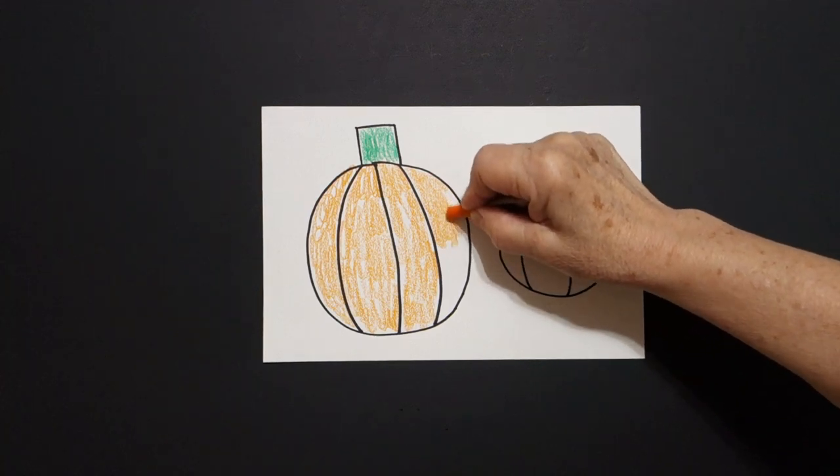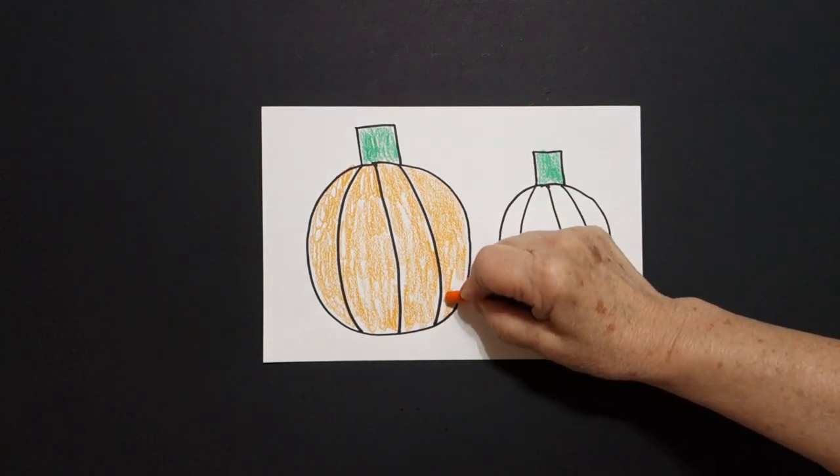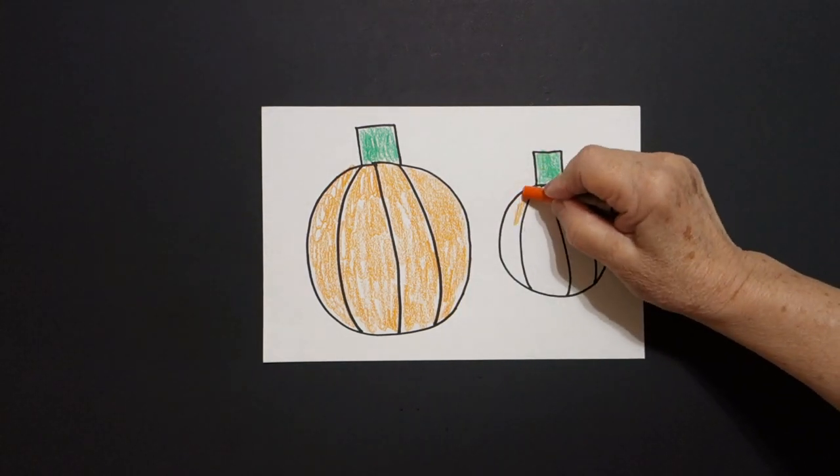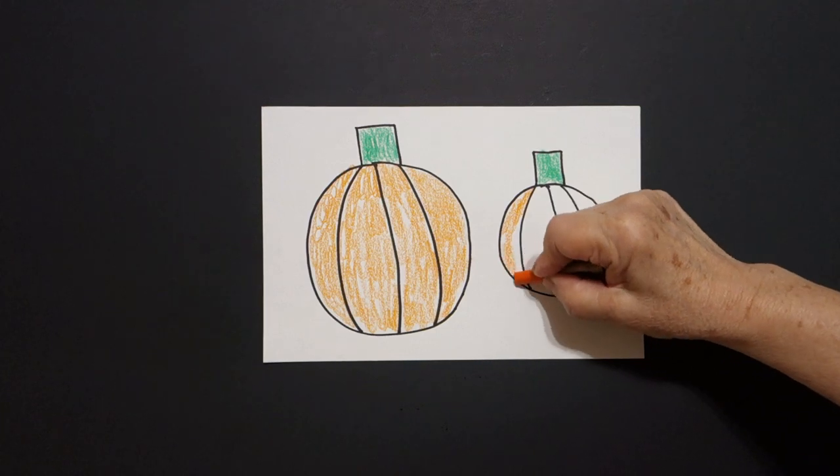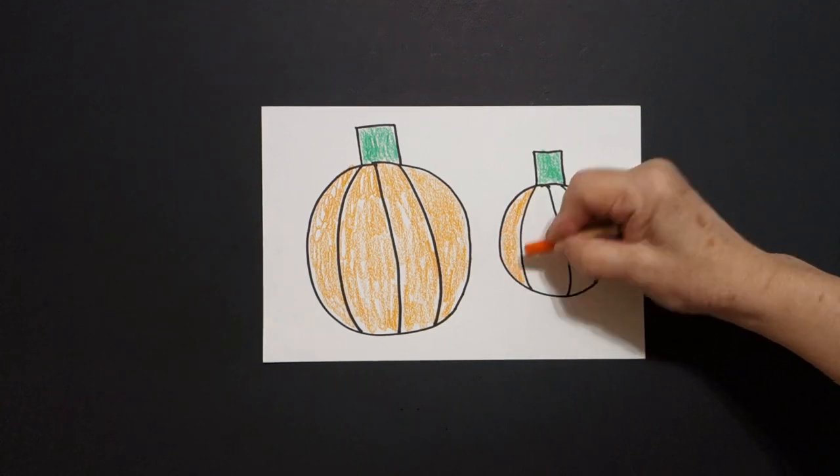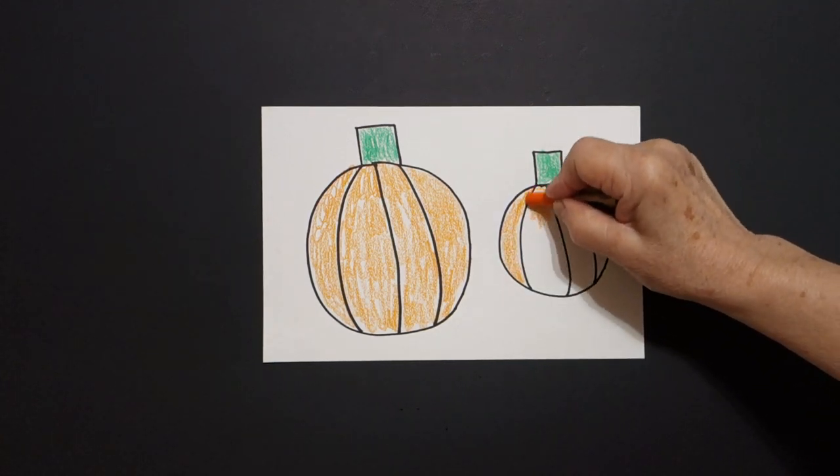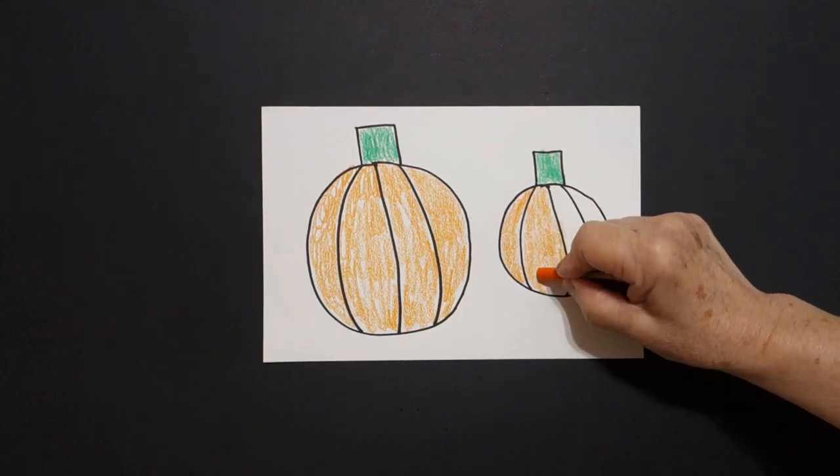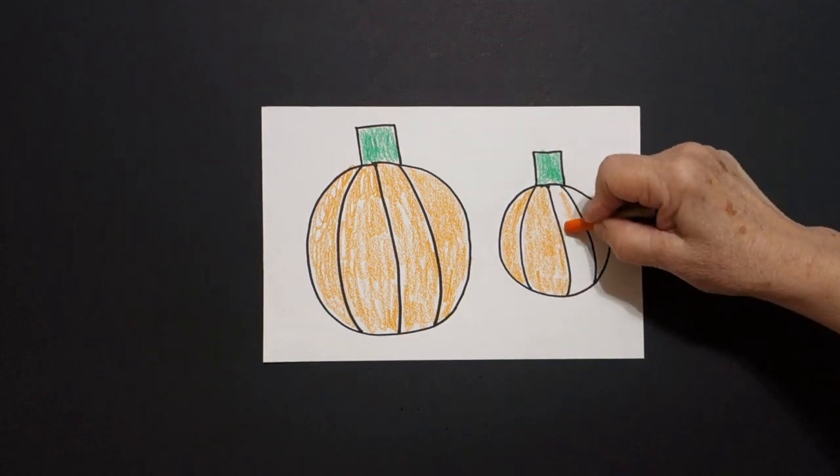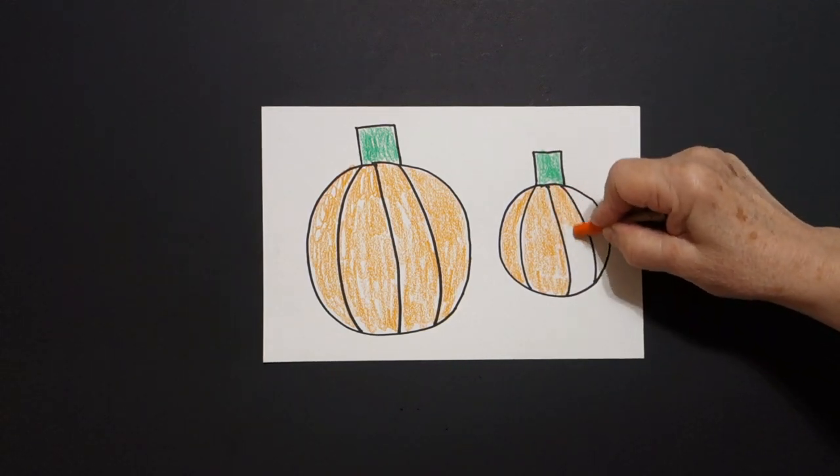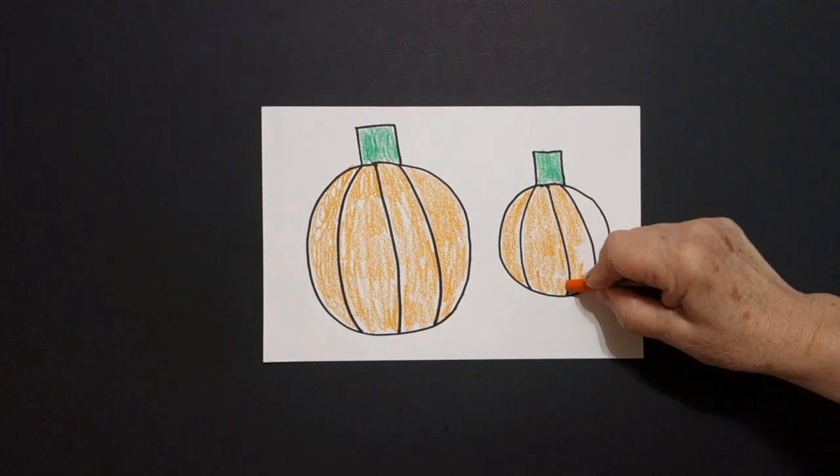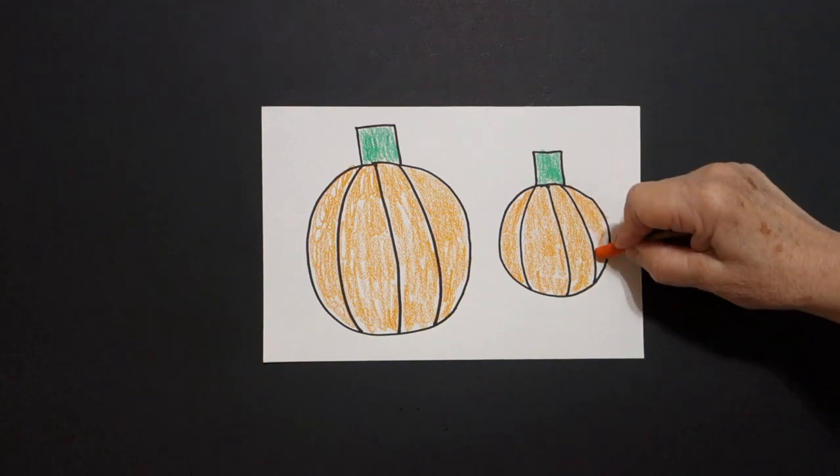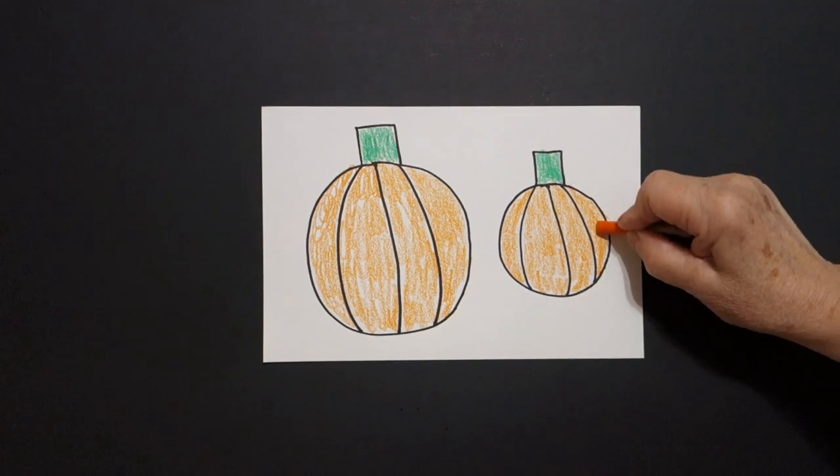And whatever I do on my big pumpkin, I'm going to do the same on my little pumpkin. So now I take my orange and I fill in the little spaces the same way I did my big spaces. Take your time. Don't color too hard. You don't want to hurt your hand. Up and down. And you're done.